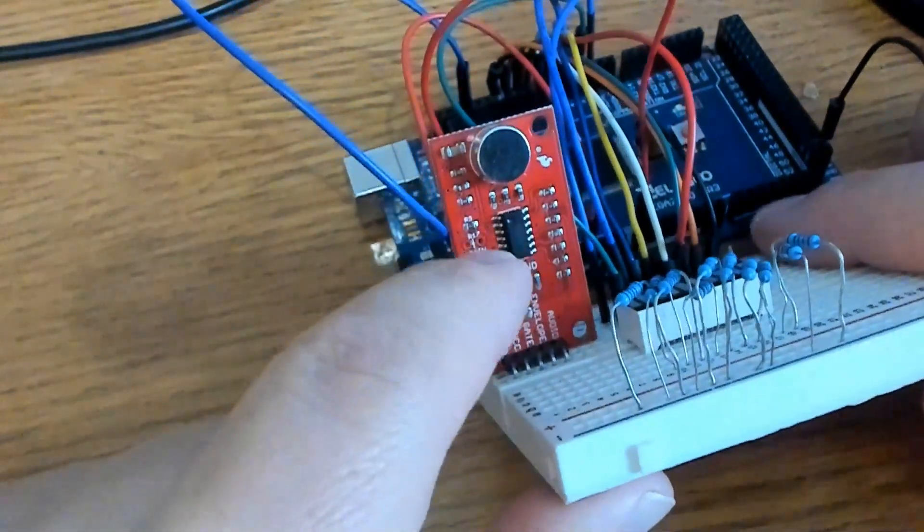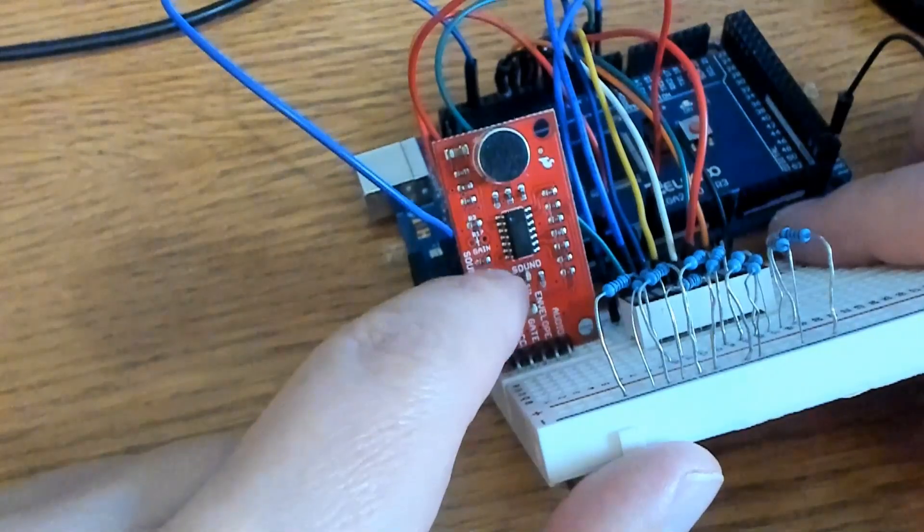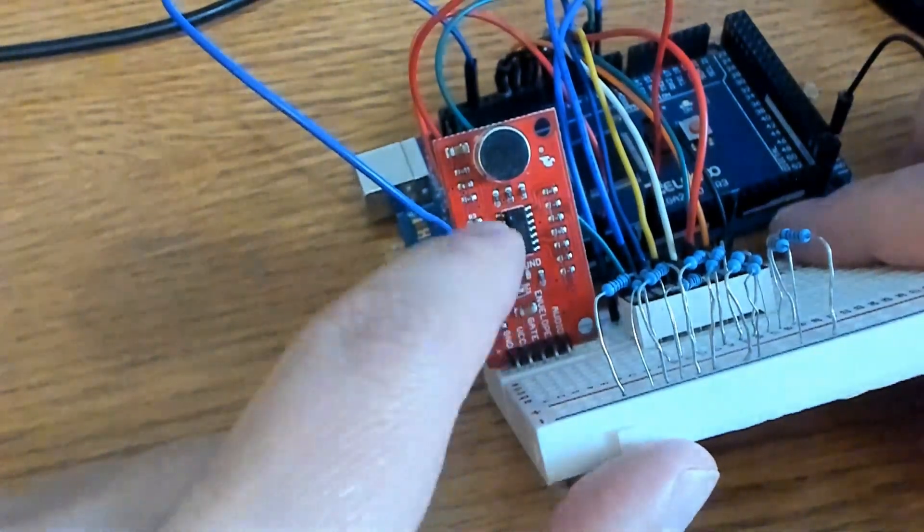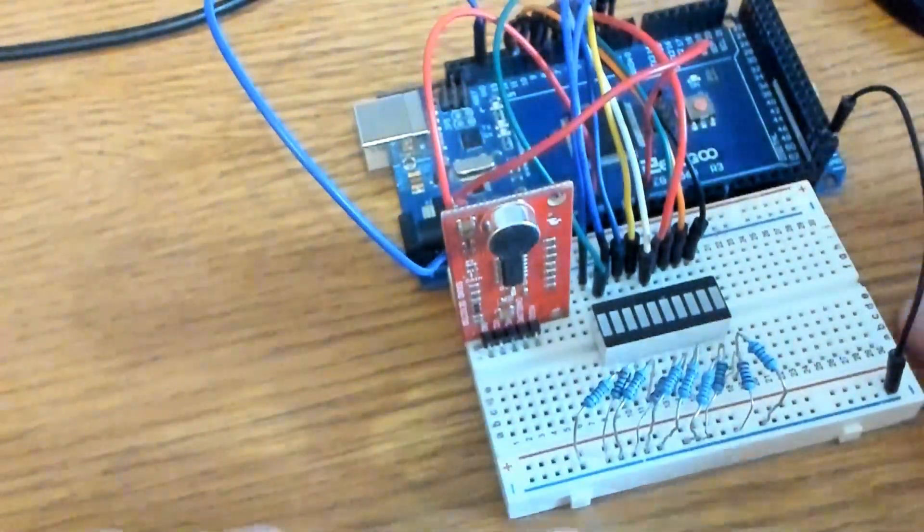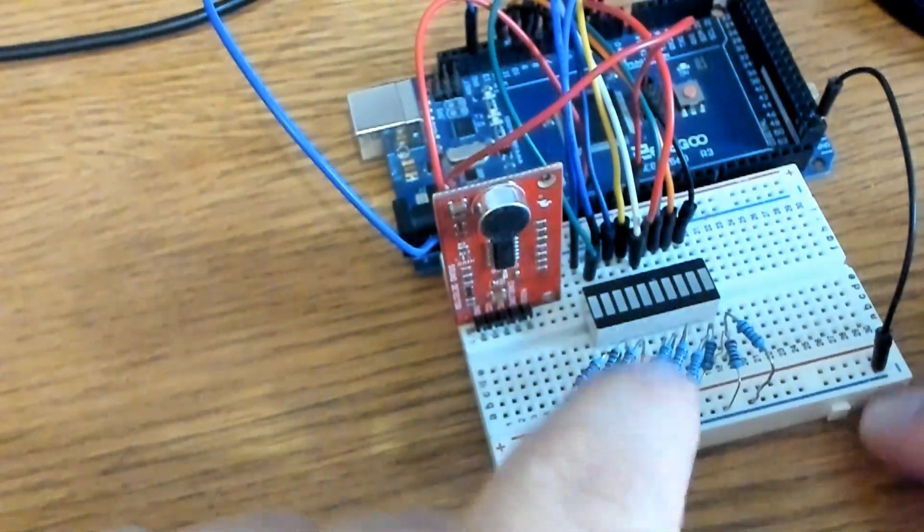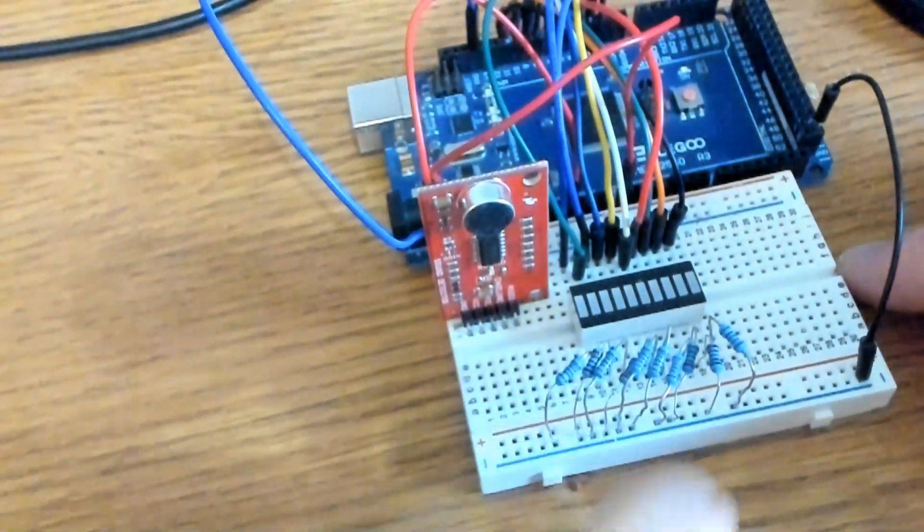I'll be using this SparkFun sound detector right here and I do have a video explaining more about how you can modify that and I'll link it below and in the video as well so you can click on it. You'll also need some 220 ohm resistors. I'm using 220, you can use 150 but these are available so I'm using 220.